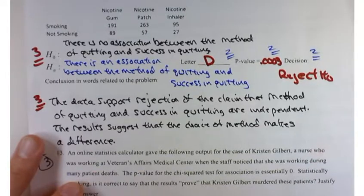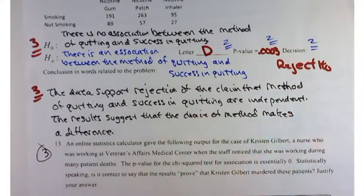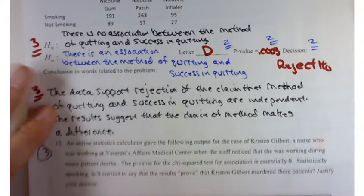So in this case, we've got a very, very small p-value. So we reject H-naught, and the data support rejection of the claim that the method of quitting and the rate of success are independent. And that's it. You can't conclude anything beyond that.